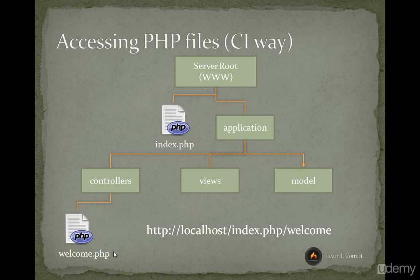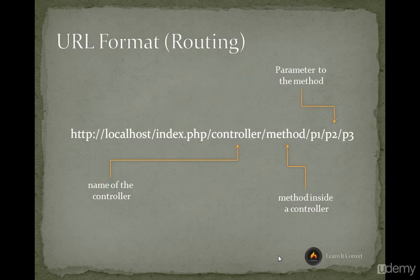The part handling the URL request — if we need to access the welcome controller, we cannot directly call application/controllers/welcome.php. Instead, we use index.php. We call localhost/index.php and then ask it to route to the welcome controller. So this is the routing that happens in CodeIgniter.